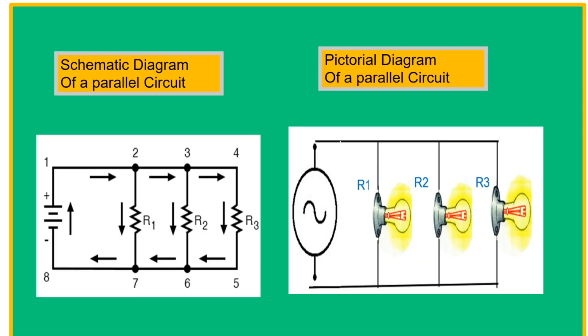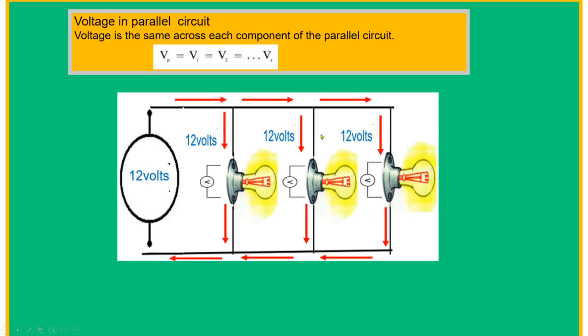Now let's proceed to parallel circuits. This is the schematic diagram of a parallel circuit and this is the pictorial diagram of a parallel circuit. Voltage in a parallel circuit: voltage is the same across each component. If we have a 12-volt supply, we also have 12 volts across each lamp.